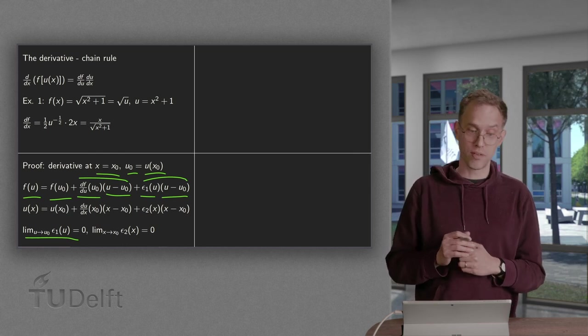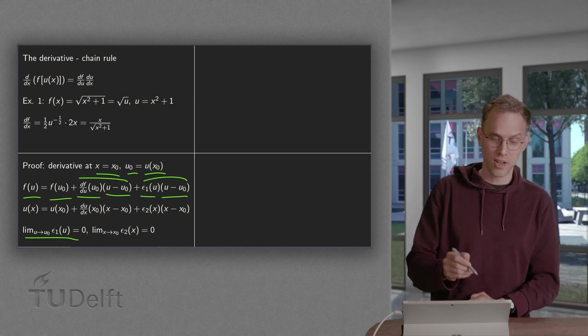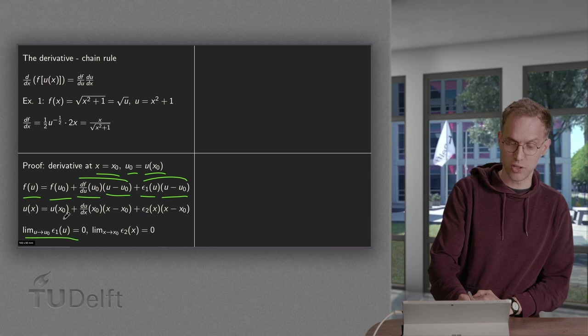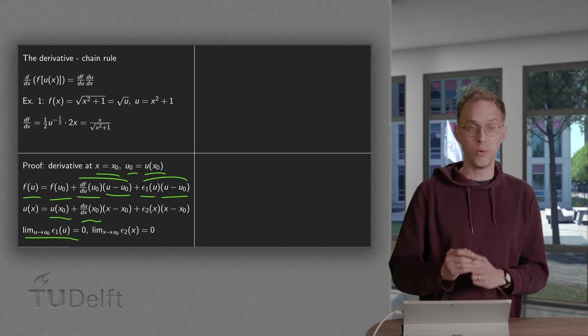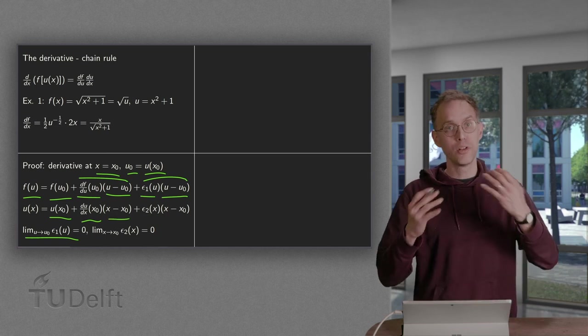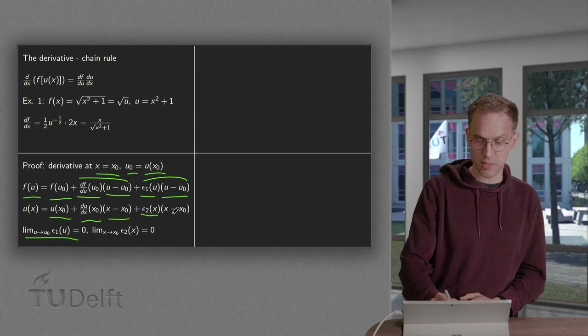You can do the same for u of x. You use a theta approximation of u of x around x0 now. So then u(x) equals u at x0 plus the du/dx at x0 times x minus x0 plus some remainder, epsilon 2 of x times x minus x0.